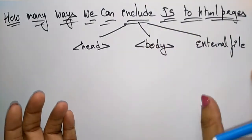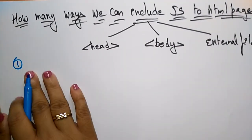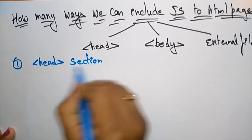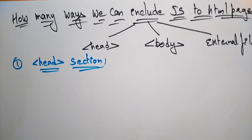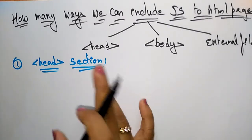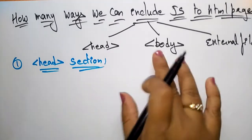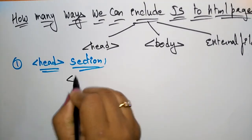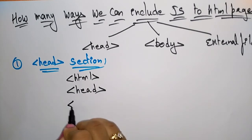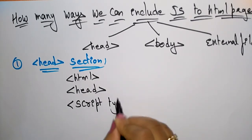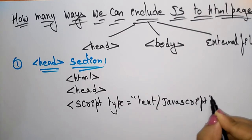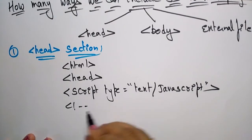First, let's see how you can add JavaScript code in the head section. With the help of script tags you can include JavaScript in the head section, body section, or an external file. Let me take an example HTML. Here the head section starts, and inside it I'm writing the script tag with language JavaScript, script type equal to text/javascript.